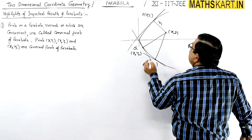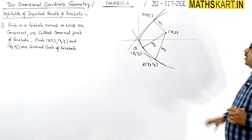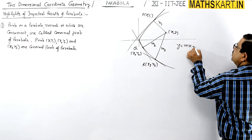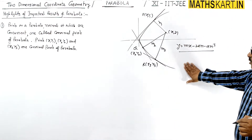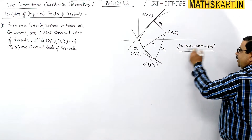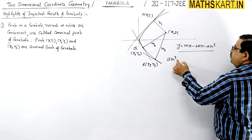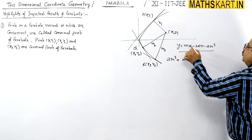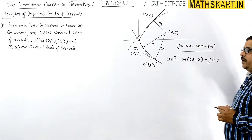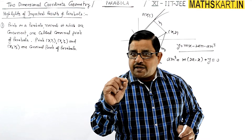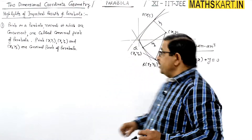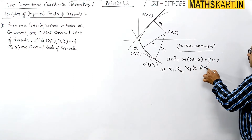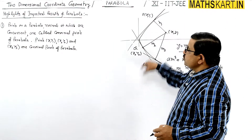Suppose slopes of the three normals are m1, m2, m3. The normal equation gives a cubic equation: y + 2mx − 2am − am³ = 0, which can be rewritten as m³ + m(2a − x) + y = 0. Since this is a cubic equation in m, let m1, m2, m3 be its three roots — these are the slopes of the three normals.